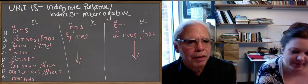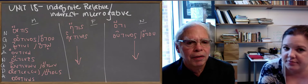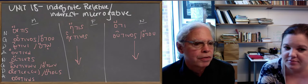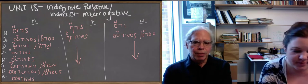So we're in unit 18 and we're talking about the indirect interrogative and also indefinite relative word hostis. If you look at the nominative singular form there, hostis, you can see it's composed of two things.